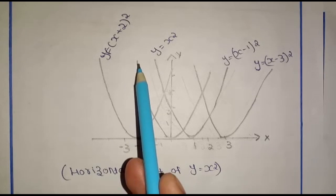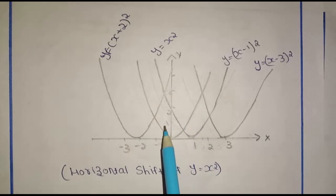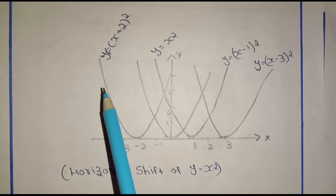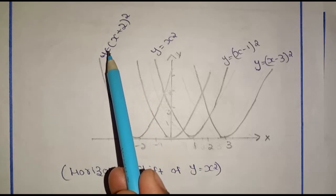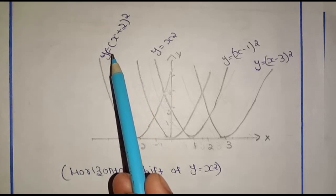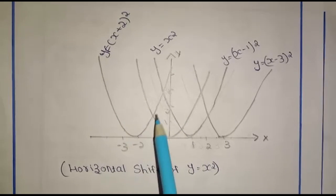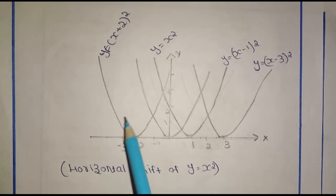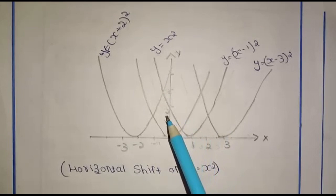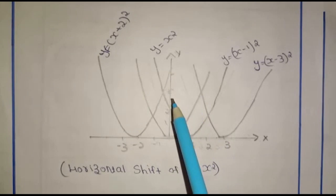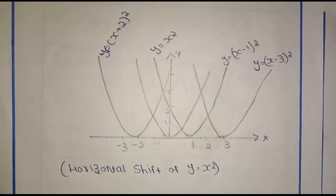The original function is y equals x squared. If we add a constant, then f of x plus 2 is equal to x plus 2 whole square. We will shift left to the negative x side. Then we will shift right — this is the horizontal shift of x squared.